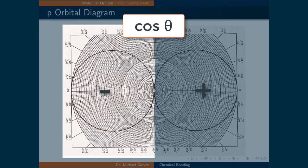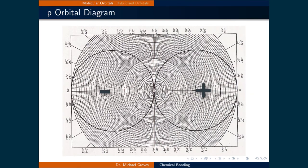The cosine of angles between 90 and 180 degrees are negative, so that region is denoted with a negative sign.